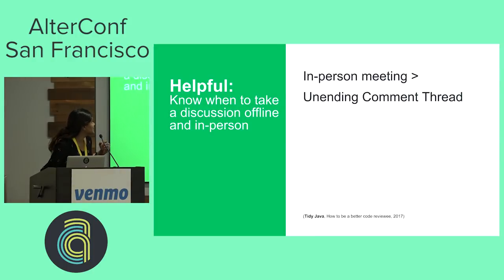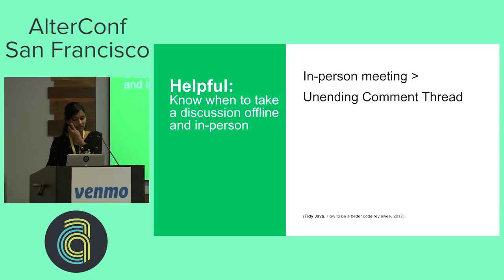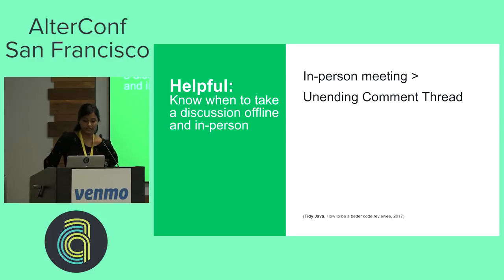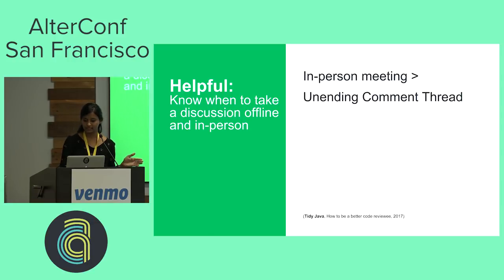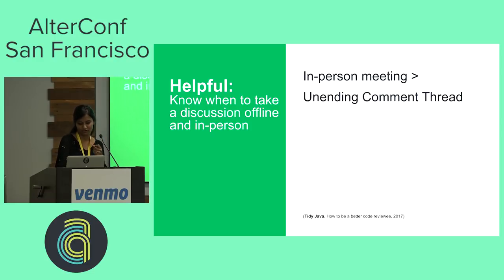Know when to take a discussion offline and in person. After 300-plus PR comments and too many contrasting proposed solutions, that should indicate that online communication is not working and that maybe you should get off the PR and go into a meeting room and talk it out. Consider sending a meeting invite to discuss the issue offline, and don't hold this review seeker hostage on a giant comment thread that doesn't seem to be going anywhere.